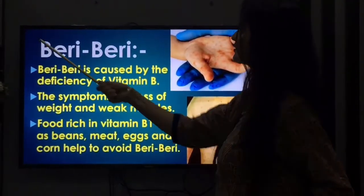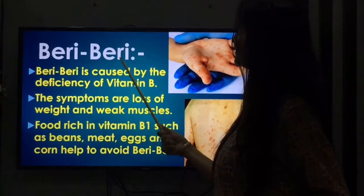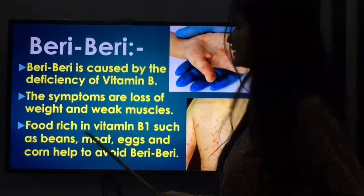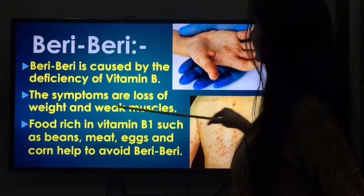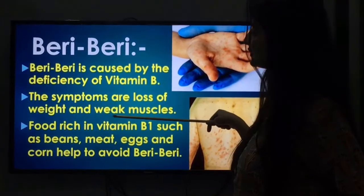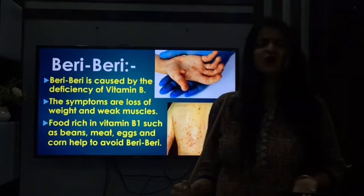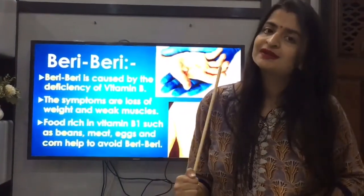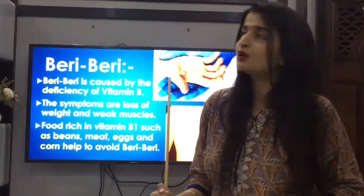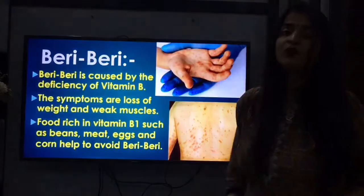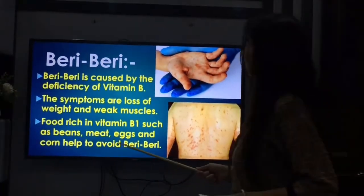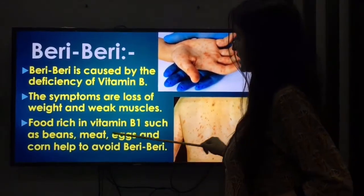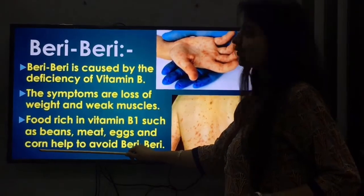Moving on to the next disease: Beriberi. Beriberi is caused by the deficiency of vitamin B1. The symptoms are loss of weight and weak muscles. Our muscles are strong and help us to keep up and work, but if our muscles are weak, we become weak too. Food rich in vitamin B1 such as beans, meat, eggs, and corn can help to avoid beriberi.